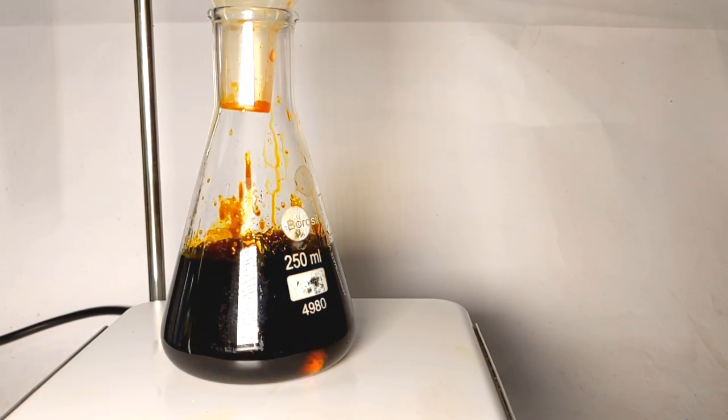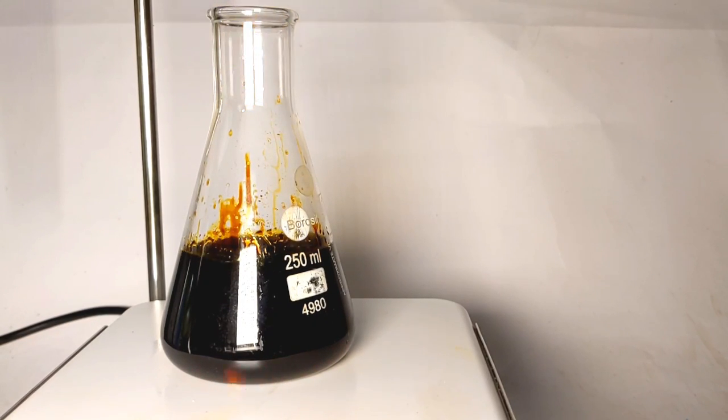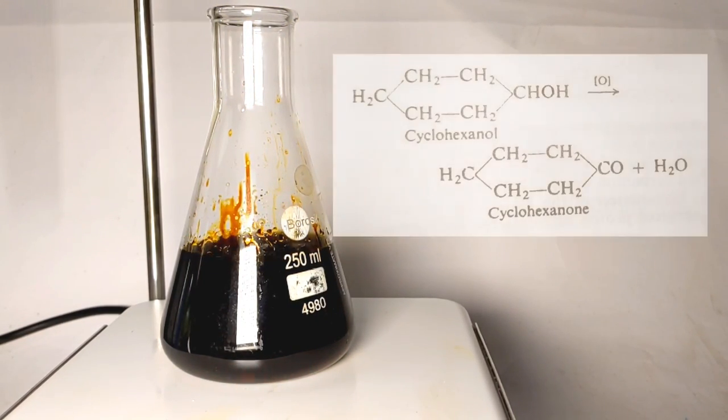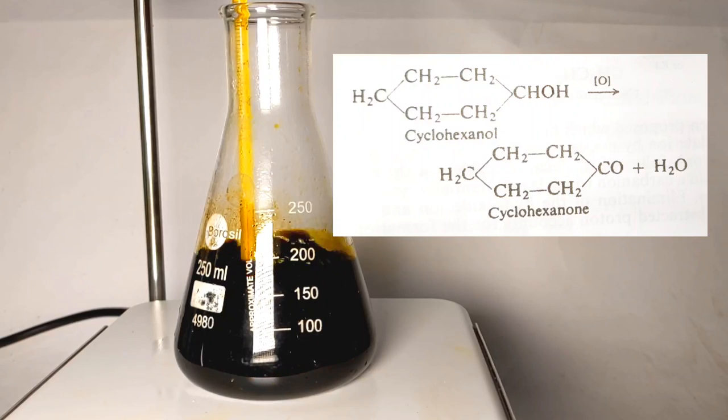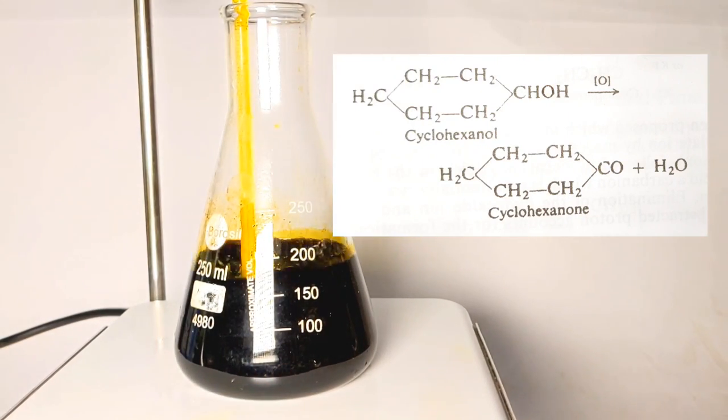Immediately, a visible color change from bright orange to dark green is observed. Oxidation of cyclohexanol to cyclohexanone is carried out along with the reduction of the hexavalent chromium to the trivalent state, thus the green color.